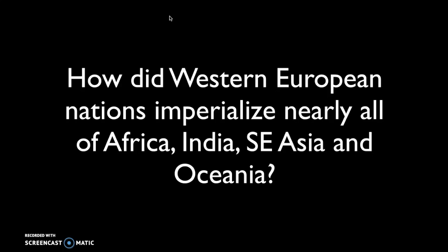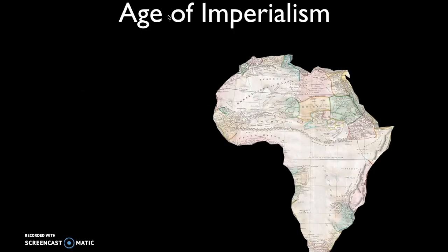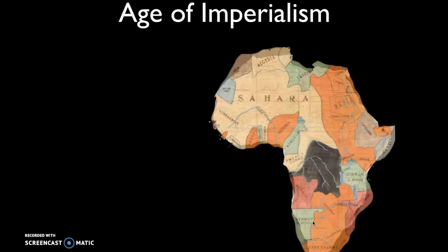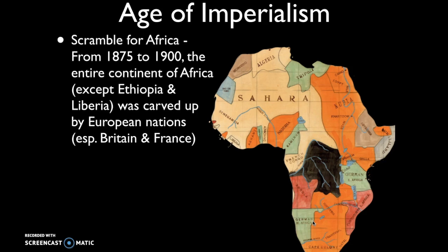We'll take these regions one at a time, starting with Africa. You'll recall from period four when European nations, starting with Portugal, first started to engage with various kingdoms and societies along the coast of Africa. But by 1875, the Europeans hadn't made very many inroads into the interior of Africa, partly because of diseases like malaria. But by 1900, that had all changed. Within about a 25-year window, from 1875 to 1900, the entire continent of Africa, except Ethiopia and Liberia, was carved up by European nations.